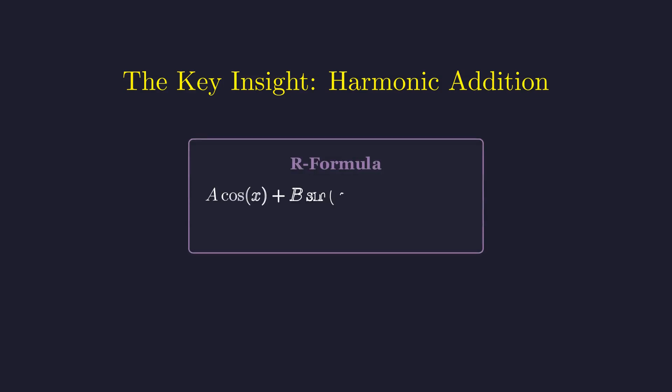This technique is known as the R formula, or Harmonic Addition Theorem. It's one of those elegant tools that lets us collapse a messy sum into a single, phase-shifted trigonometric function. Mathematics at its most satisfying.